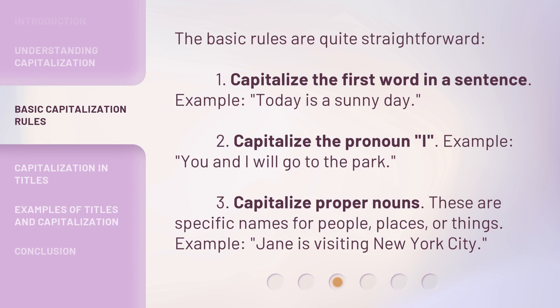The basic rules are quite straightforward. 1. Capitalize the first word in a sentence. Example: Today is a sunny day. 2. Capitalize the pronoun I. Example: You and I will go to the park. 3. Capitalize proper nouns — these are specific names for people, places, or things. Example: Jane is visiting New York City.